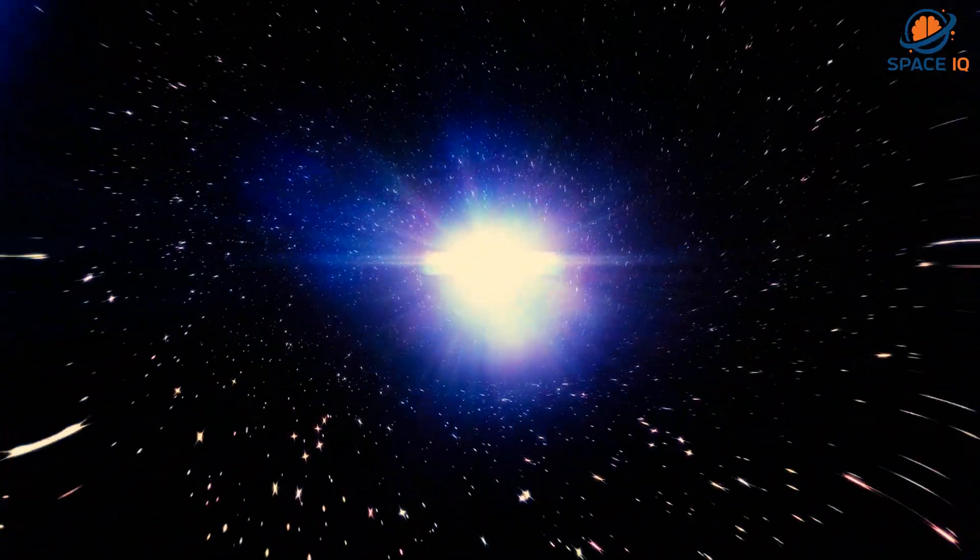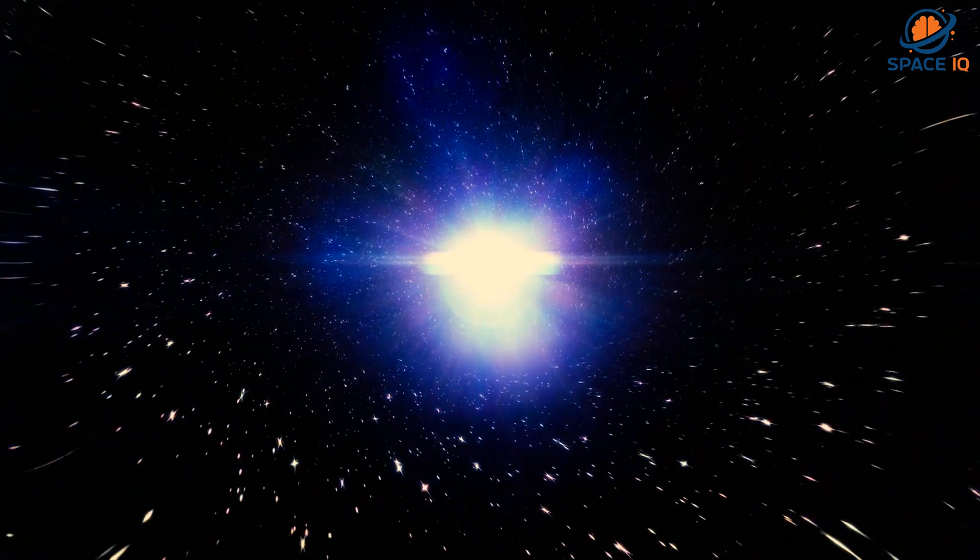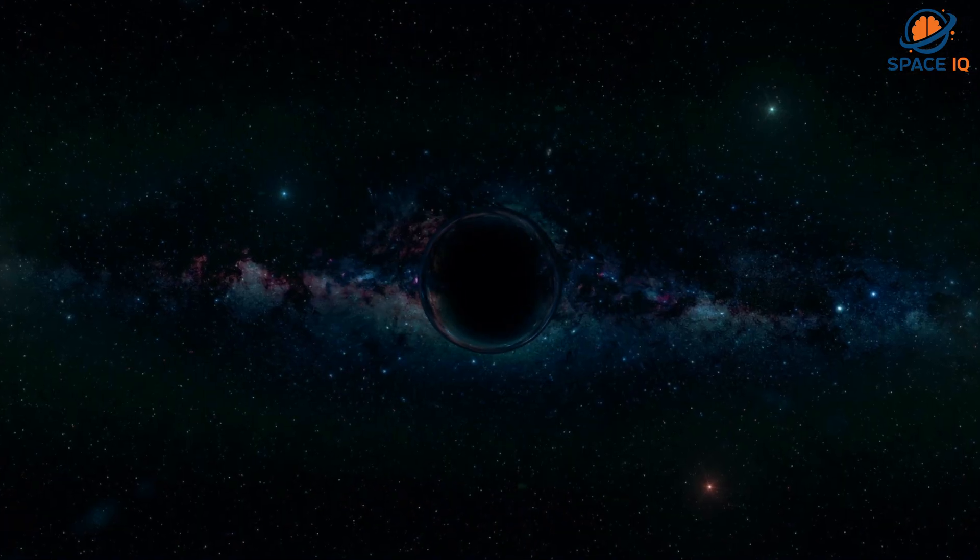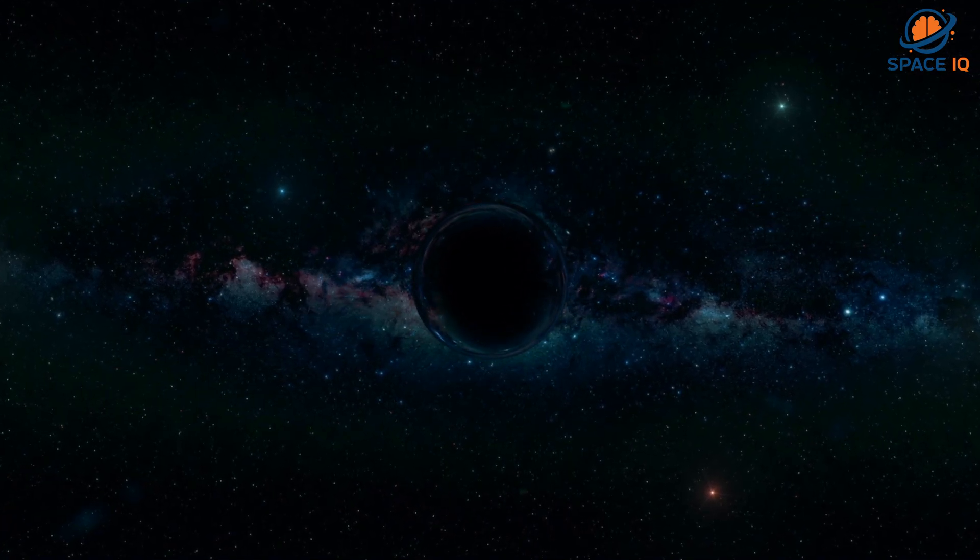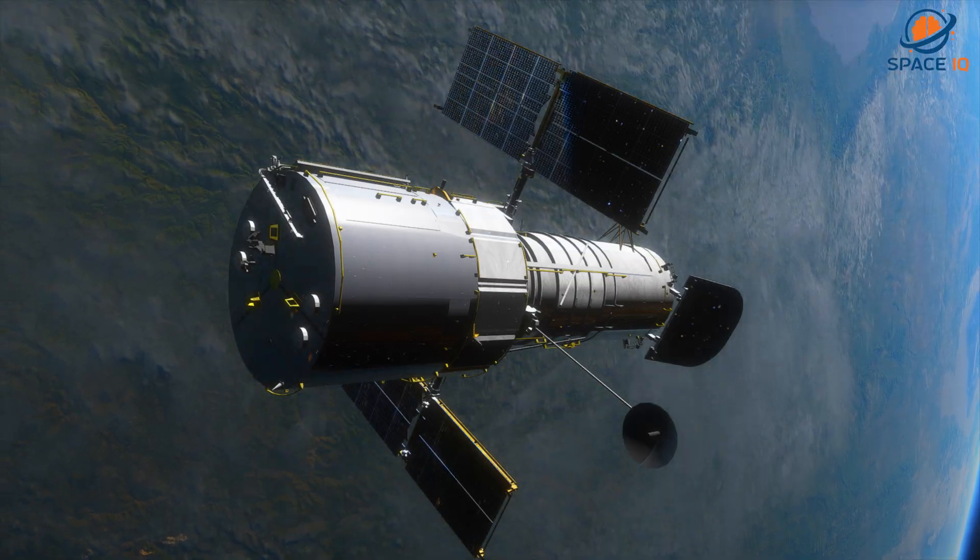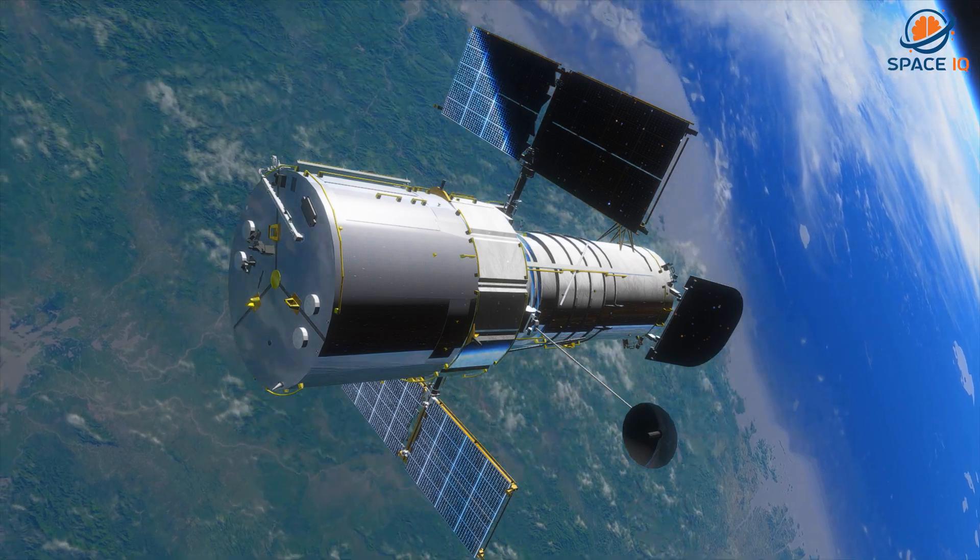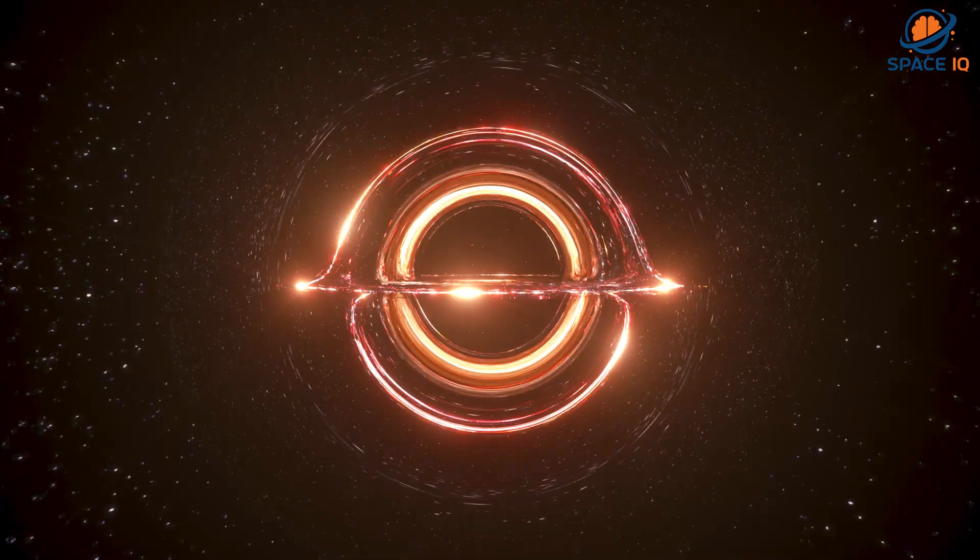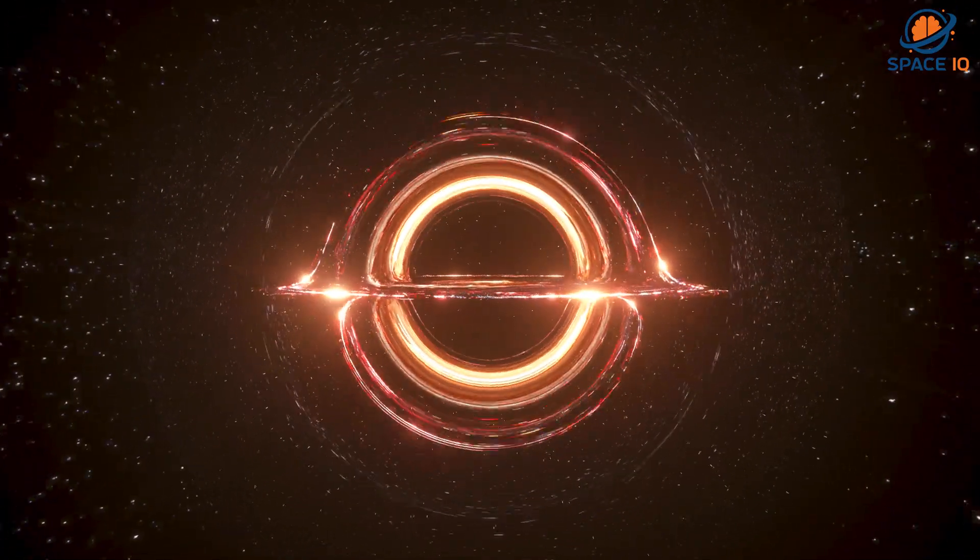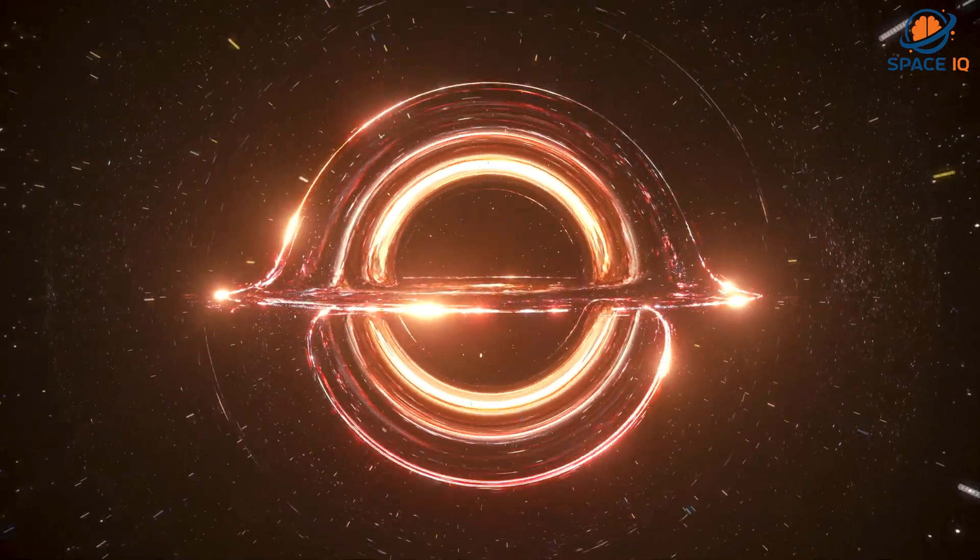This can happen when a star is dying. Because no light can get out, people can't see black holes. They are invisible. Space telescopes with special tools can help find black holes. The special tools can see how stars that are very close to black holes act differently than other stars.